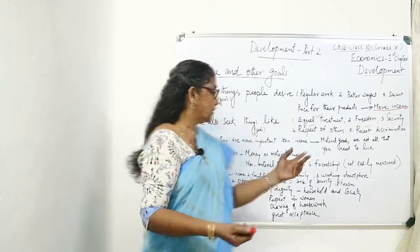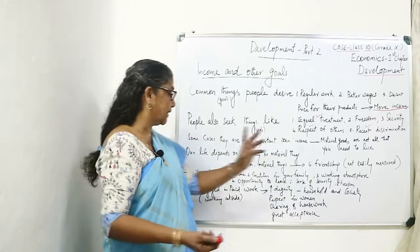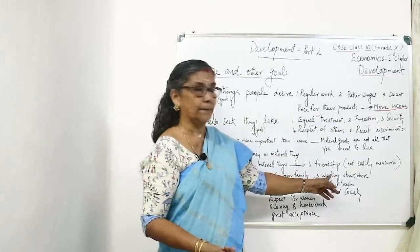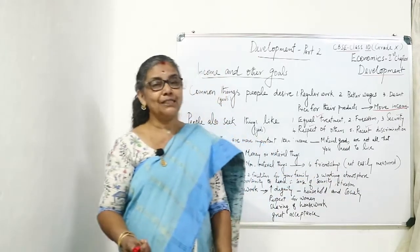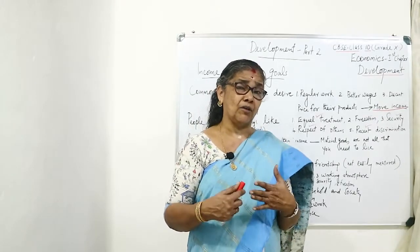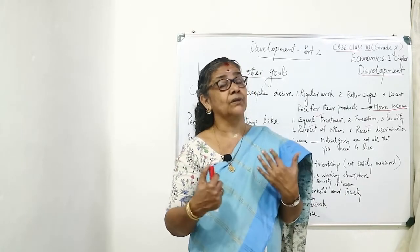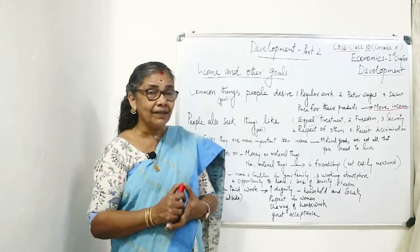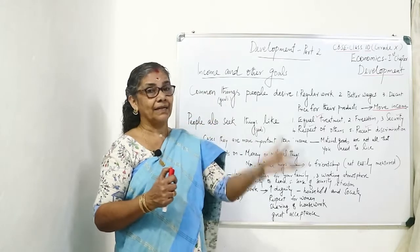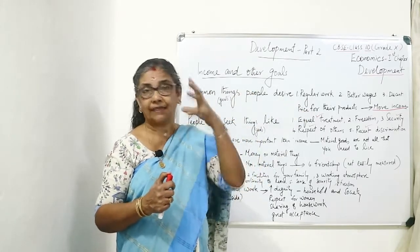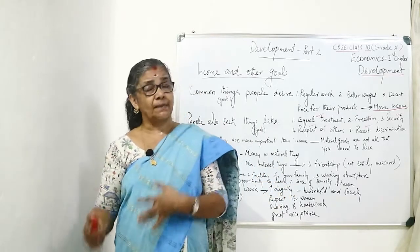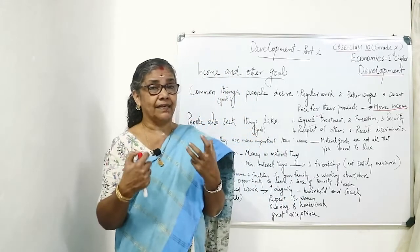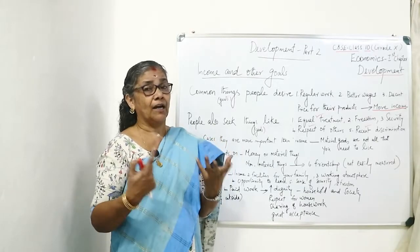Our life depends not only on money or material things — non-material things are also important. One more thing added in the textbook is friendship. We cannot measure how much friendship or how much concern people are giving to each other. Things that cannot be measured are called non-material things.